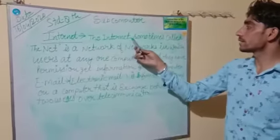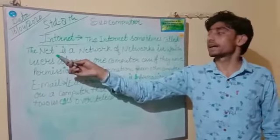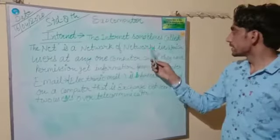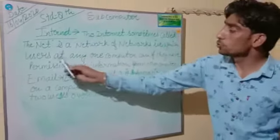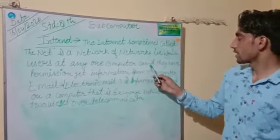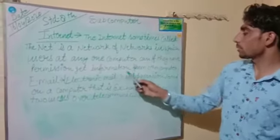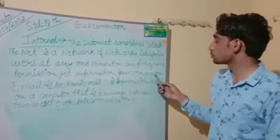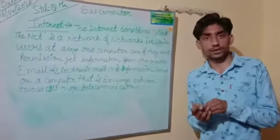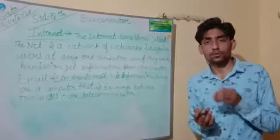The internet, sometimes called the net, is a network of networks in which users at any one computer can, if they have permission, get information from other computers. In simple words, internet is the fastest mode of communication.